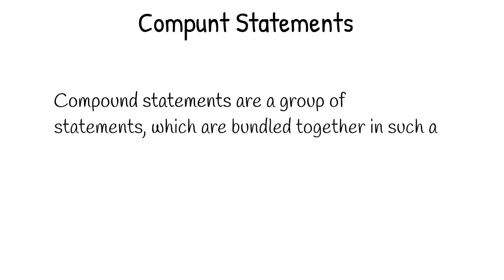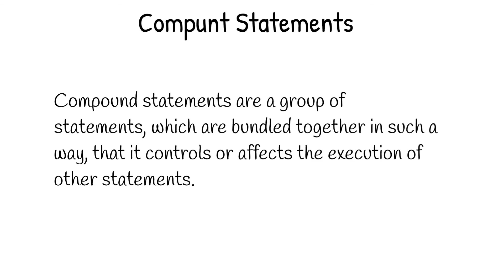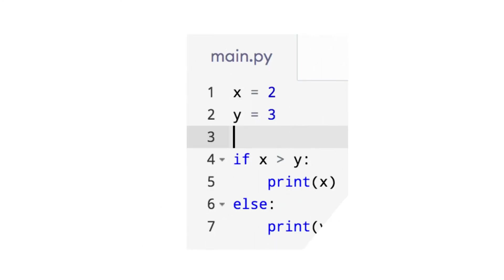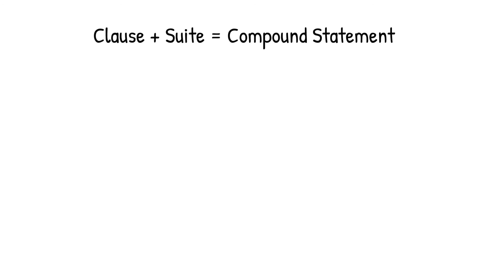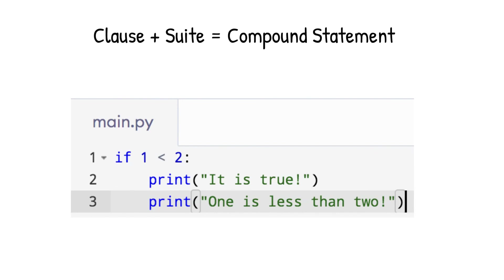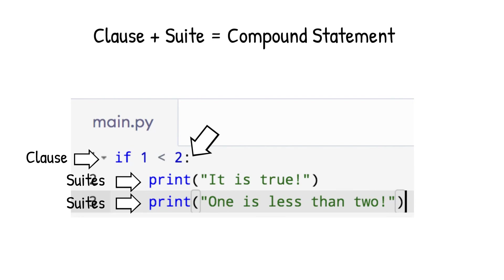Now let us understand compound statements in Python. Compound statements are a group of statements bundled together in such a way that they control or affect the execution of other statements, and usually span multiple lines of code. A compound statement consists of a clause and a suite. A clause is the physical line of code that ends with a colon symbol. The indented physical lines controlled by the clause are known as suites. The combination of a clause and suites is known as a compound statement. For example, 'if 1 < 2:' is a clause, and the indented print statements beneath it are the suites.